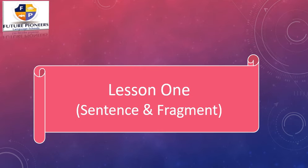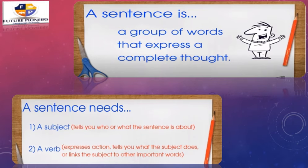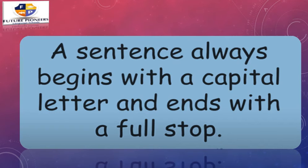Before we start the lesson, we have to know what is a sentence and what is a fragment. A sentence is a group of words that express a complete thought, and the sentence must have meaning. A sentence needs a subject, which tells you who or what the subject is about, and it needs a verb. The verb expresses action and tells you what the subject is doing. A sentence always begins with a capital letter and ends with a full stop or period.